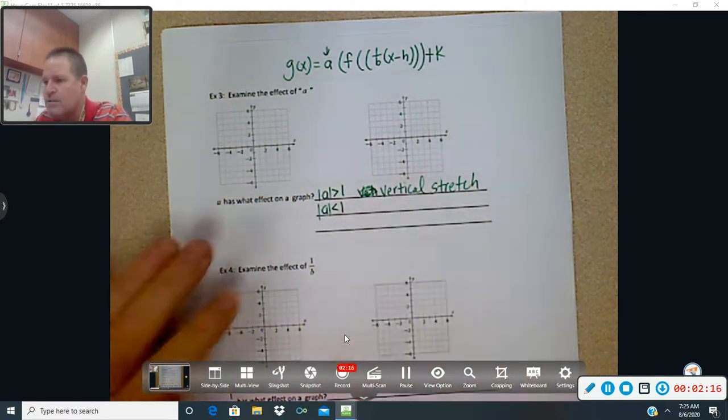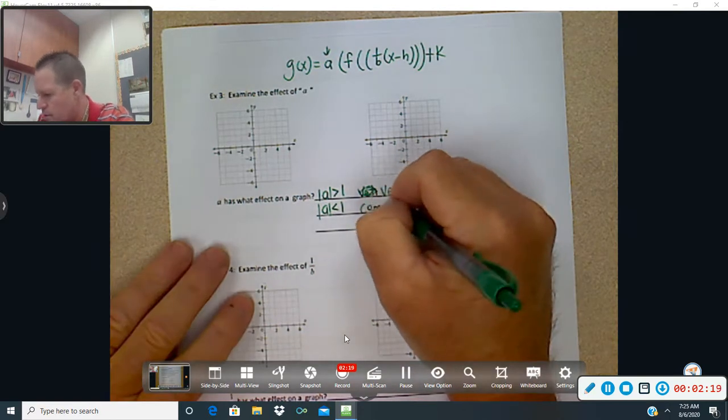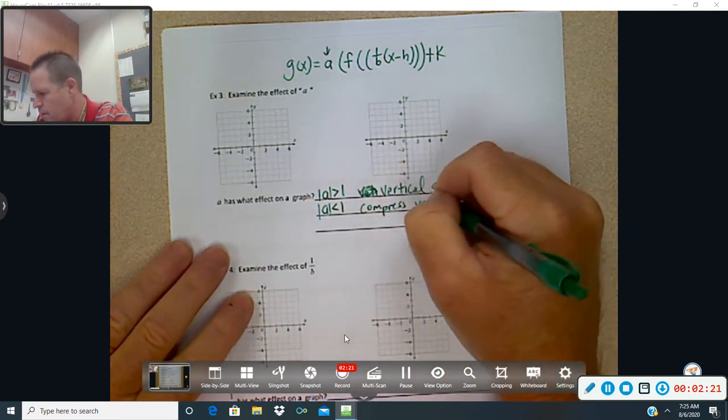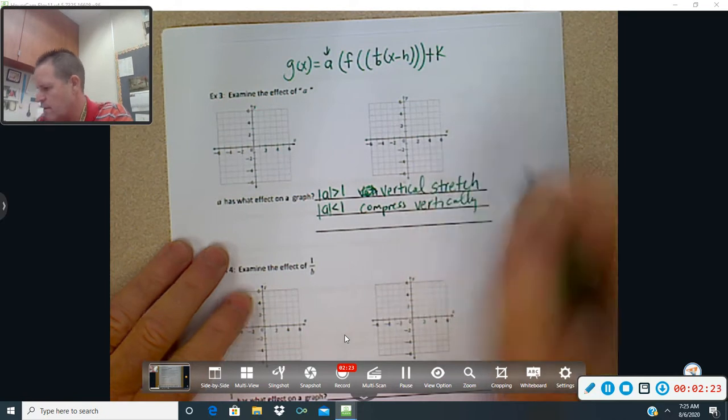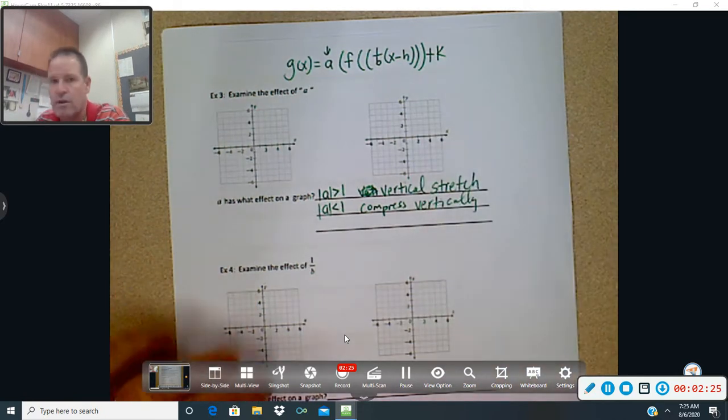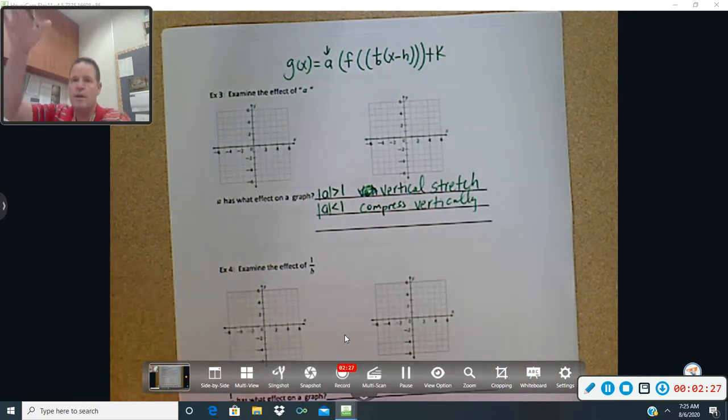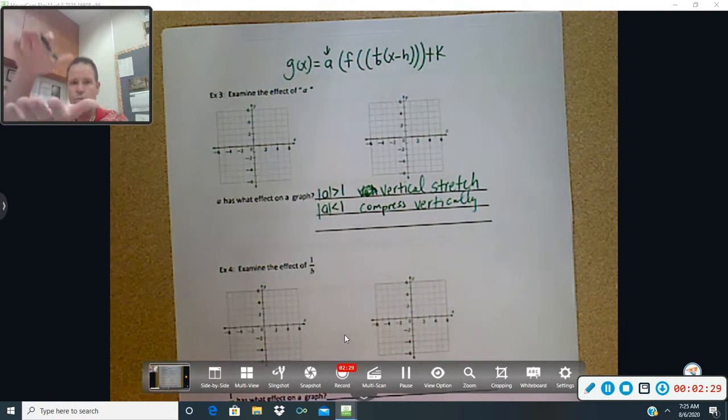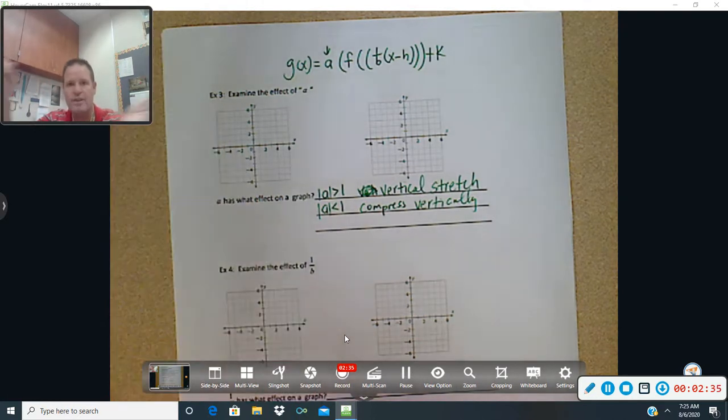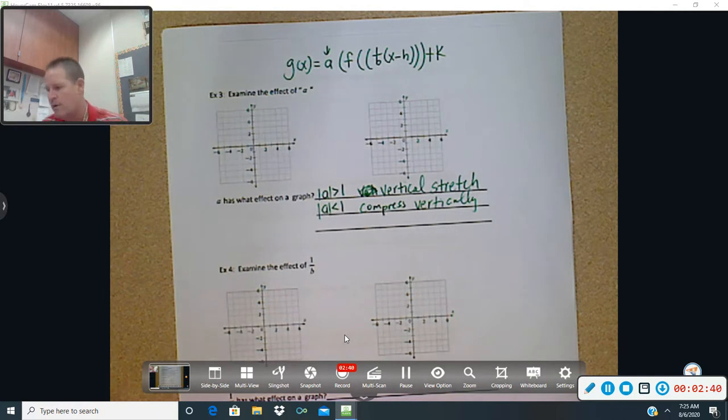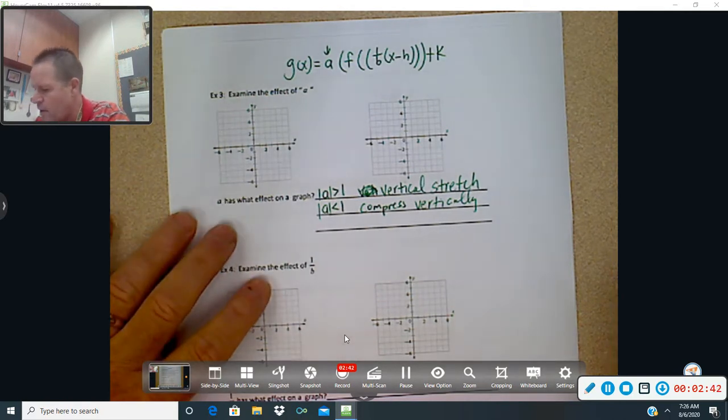If it's less than 1, we're going to compress vertically, OK? Compress vertically. So if we're going to compress it, we're going to smash it down. Think about if you smash something down. It's going to stretch out this way, OK? So if I compress it down, it's actually going to get a little wider. And you'll see that in just a second, right?